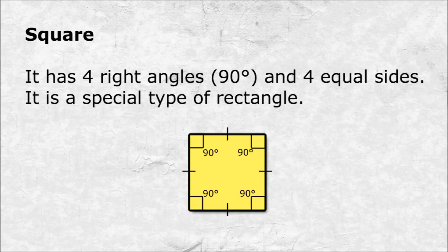Square. It has four right angles, 90 degrees, and four equal sides. It is a special type of rectangle.